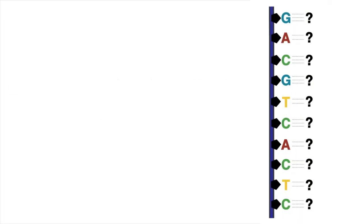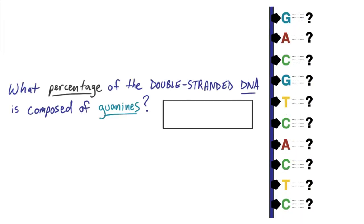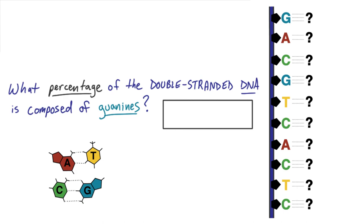So take a look at the strand here. Now if I don't give you the other side, can you tell me what percentage of the whole DNA structure is guanines, or G's? This can get a little tricky, so if you get stuck, take a look at the base pairing rules.